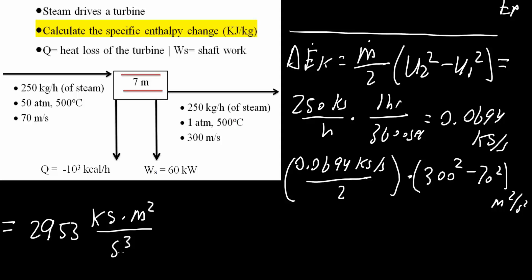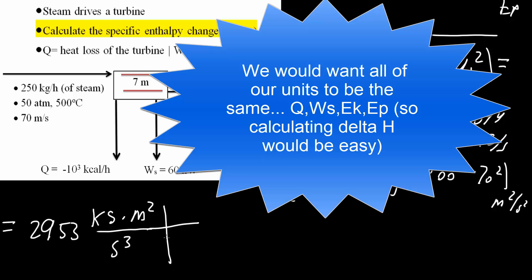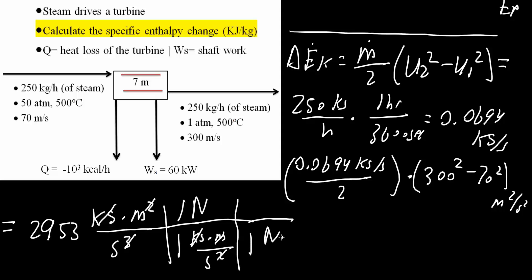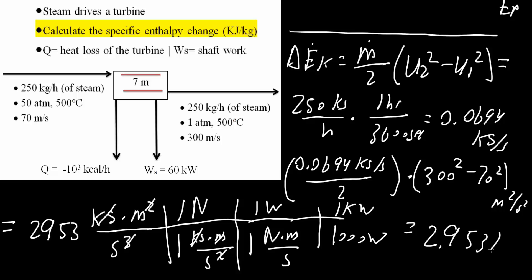We want to convert this into kilowatts. One conversion we know is 1 kilogram times meter divided by second squared equals 1 newton. By doing this, kilograms cancel, and we would have only a meter times newton. Second cubed divided by second squared gives us just second. So now we have meters times newton divided by second. And 1 newton times meter divided by second is 1 watt, and 1,000 watts is 1 kilowatt. So we get 2.953 kilowatts.